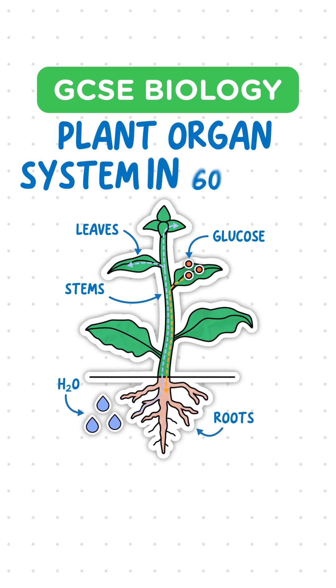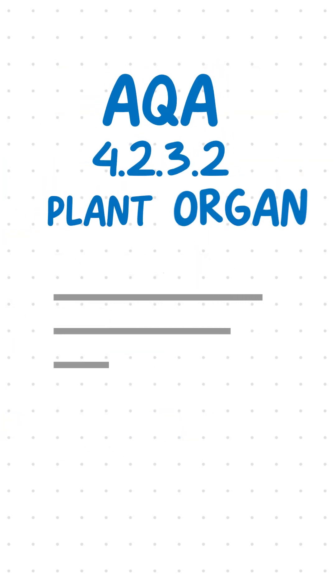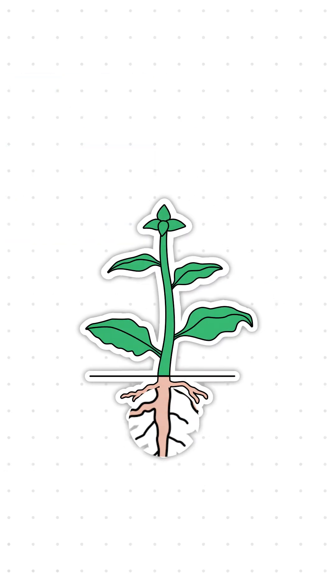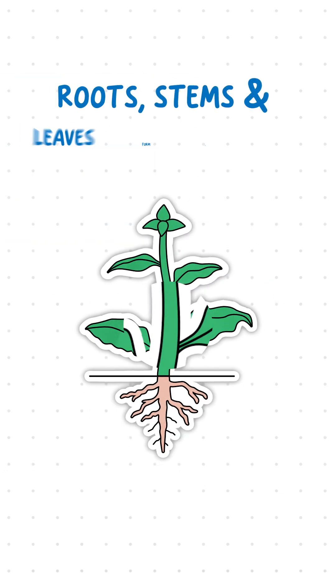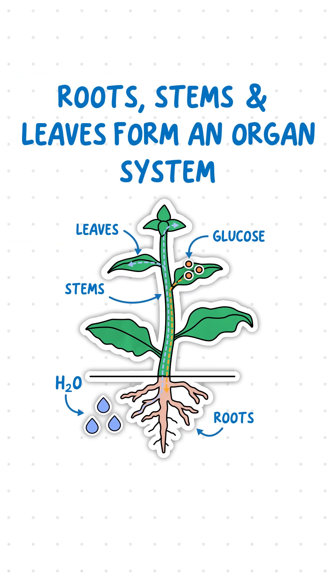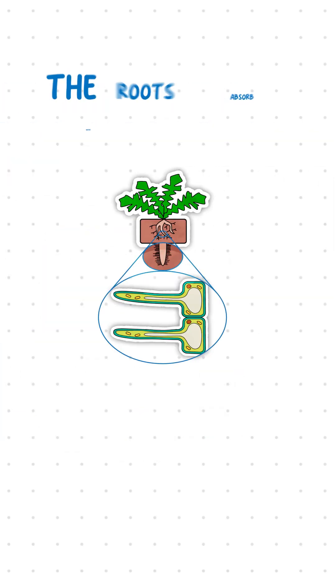Here's the plant organ system in 60 seconds. We're covering everything you need to know for this topic from the AQA specification. The roots, stem and leaves form an organ system for transporting substances around plants.